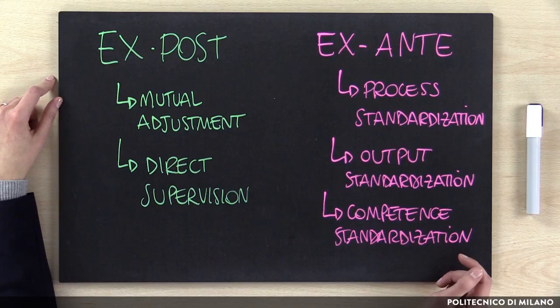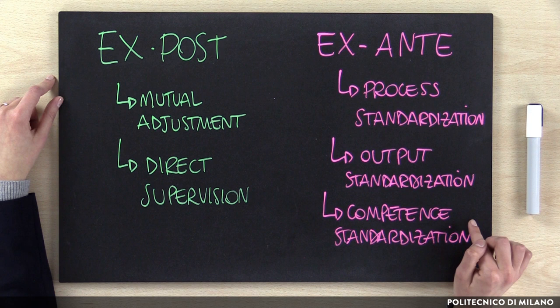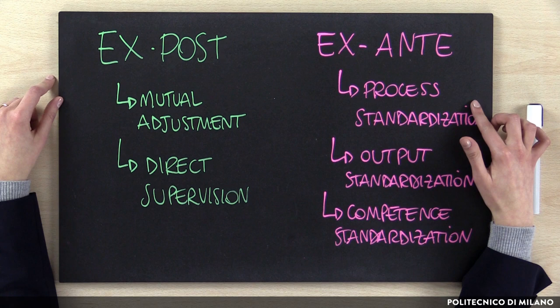Regarding the company, the coordination mechanism could change based on company evolution. The higher the complexity, uncertainty, and turbulence, the more structured coordination mechanisms are needed. From the unit perspective, the same company could use different mechanisms in different departments. For example, an innovative company could manage the R&D department through competence standardization, but use process standardization to coordinate quality management people or the production line.